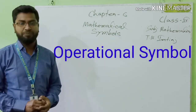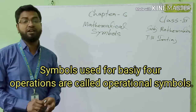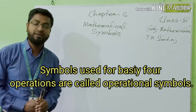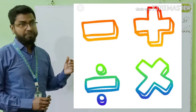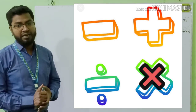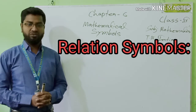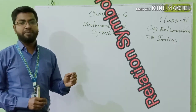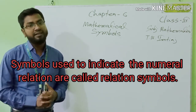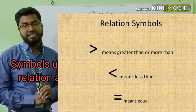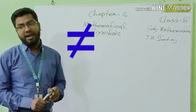Then, operational symbols. Symbols used for four basic operations are called operational symbols. That is: plus, minus, multiplication, and division. Then, relation symbols. Symbols used to indicate mutual relations are called relation symbols. That is: equal to, greater than, smaller than, not equal, not greater, and not smaller.